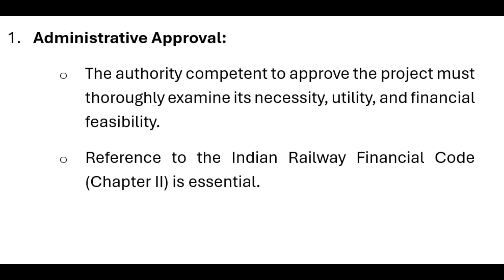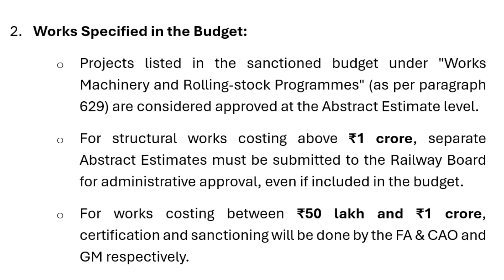Approval process: First, administrative approval — the authority competent to approve the project must thoroughly examine its necessity, utility, and financial feasibility. Reference to the Indian Railway Financial Code, Chapter 2, is essential. Second, work specified in the budget — projects listed in the sanctioned budget under Works, Machinery and Rolling Stock Programs, as per paragraph 629, are considered approved at the abstract estimate level.